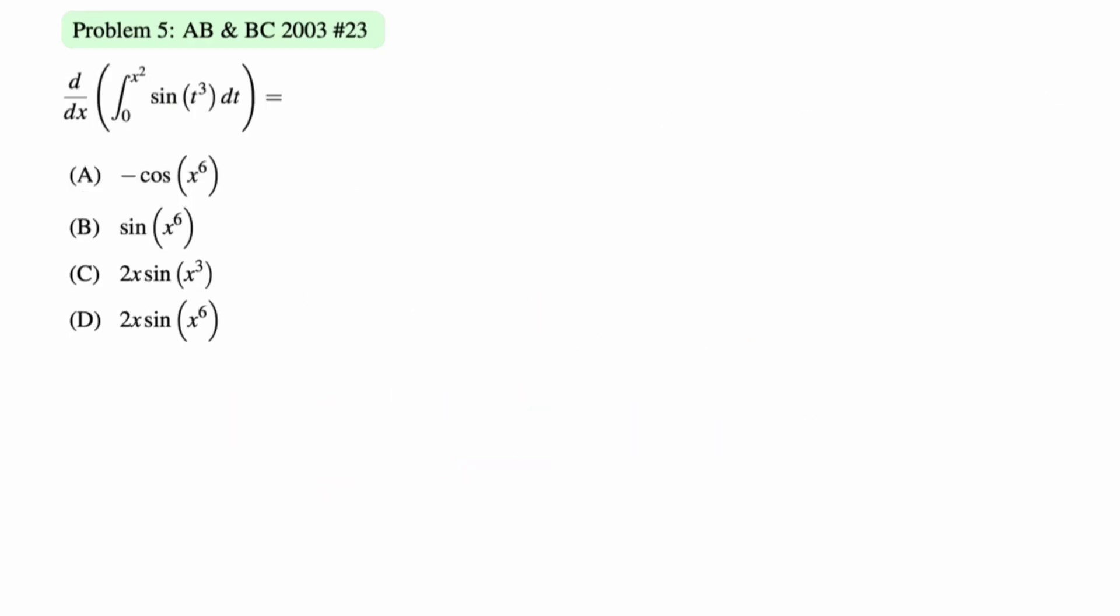This is the derivative of an integral, so this is the second fundamental theorem. When you're using the second fundamental theorem, the key thing is to not forget the chain rule. Step 1 is take the upper bound and sub it into the integrand everywhere you see a t, or really anywhere you see a variable, but it's usually the variable t. So so far we have sine of the quantity x squared cubed times, this is where the chain rule comes in, times the derivative of x squared, which is 2x. Then we can clean this up, and we get 2x sine of x squared cubed is x to the 6th, and we circle d. Let's take a look at another problem.